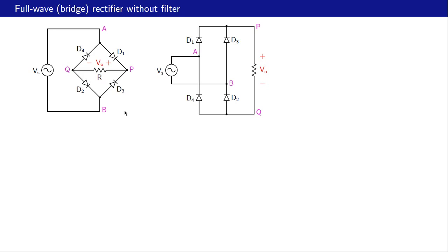Let us redraw this circuit in a more friendly format. We verify that the two circuits are identical: the source is between nodes A and B in both, the load is between P and Q in both. D1 is between A and P, D2 between Q and B, D3 between B and P, and D4 between Q and A — the same in both representations. We will use this redrawn circuit for further analysis.